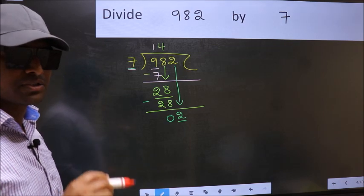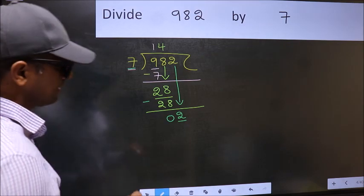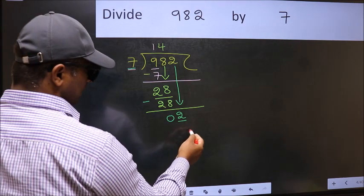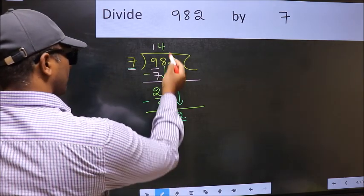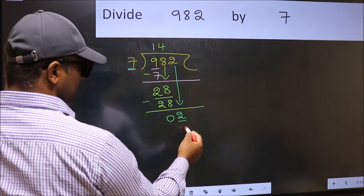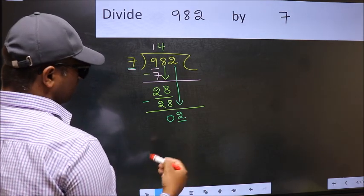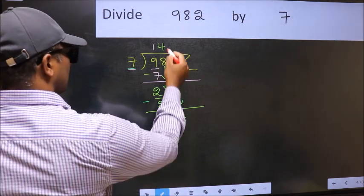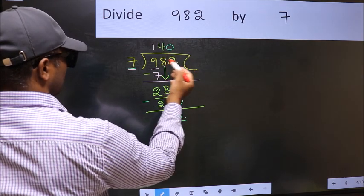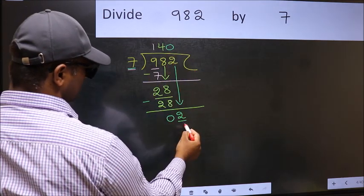Instead, what you should think of doing is, which number should we take here? If I take 1, we will get 7, but 7 is larger than 2. So what we should do is we should take 0. So 7 into 0, 0.